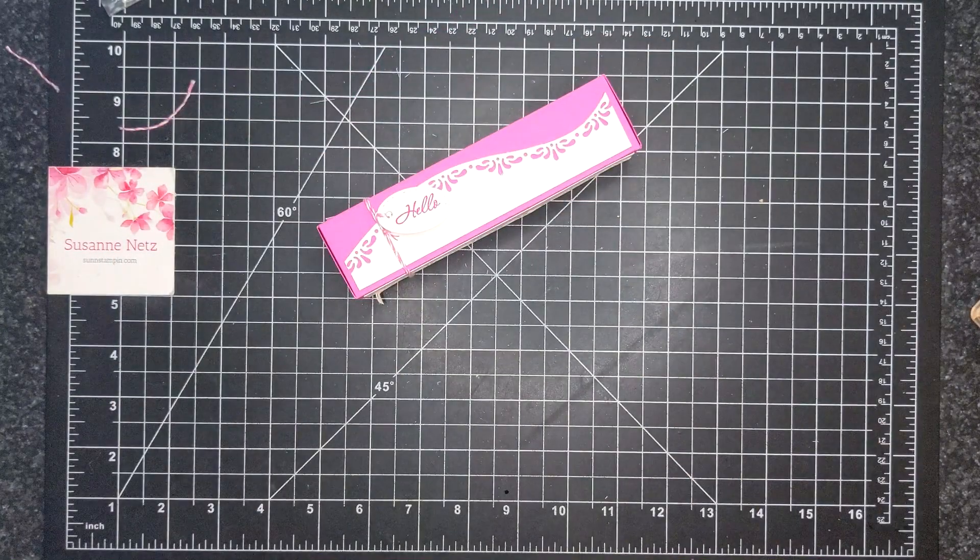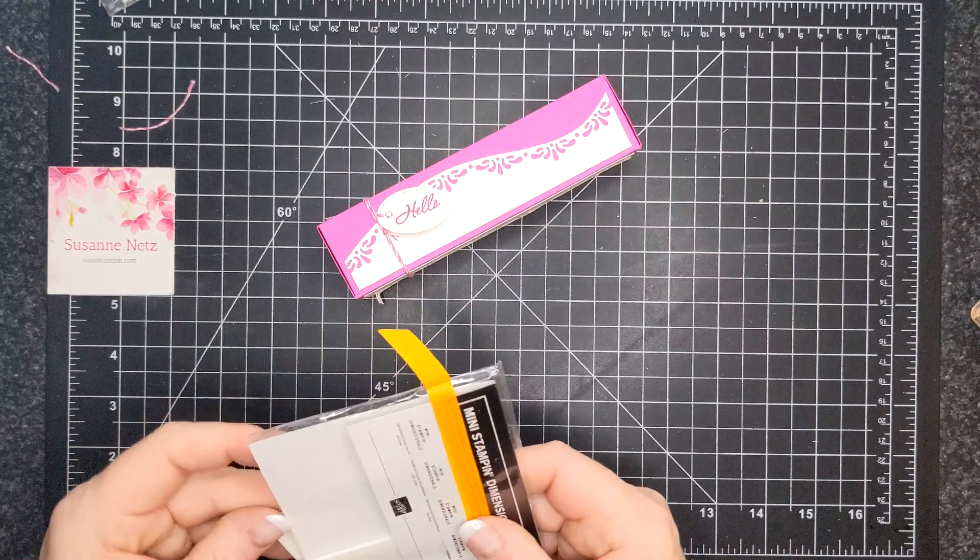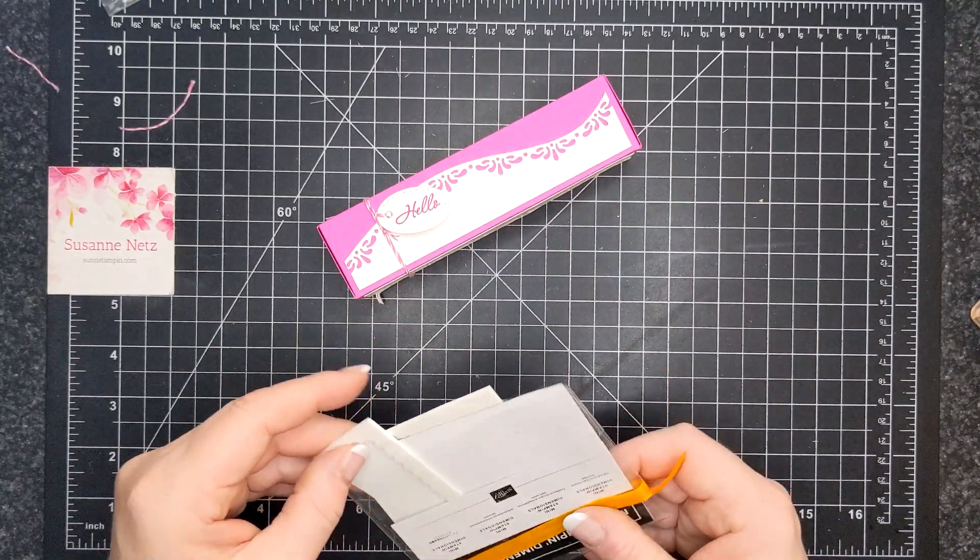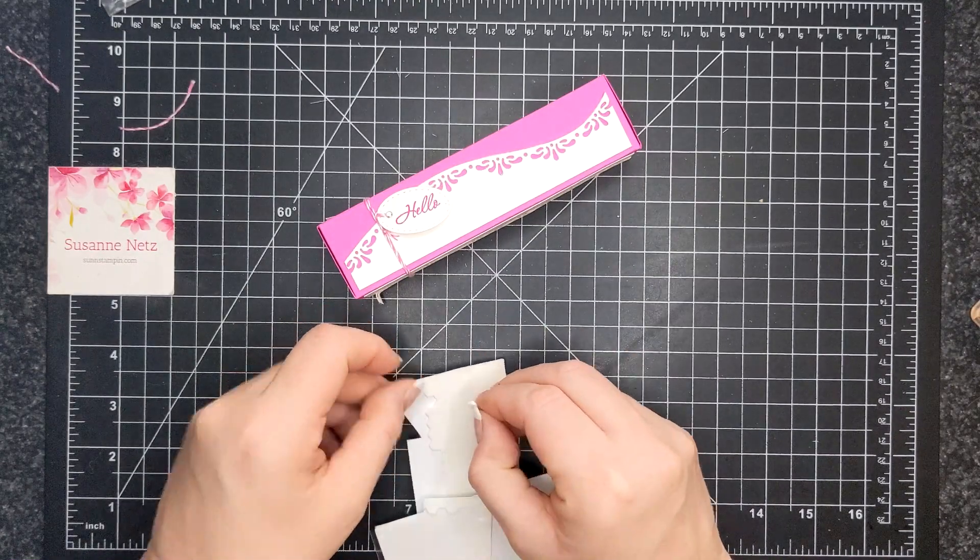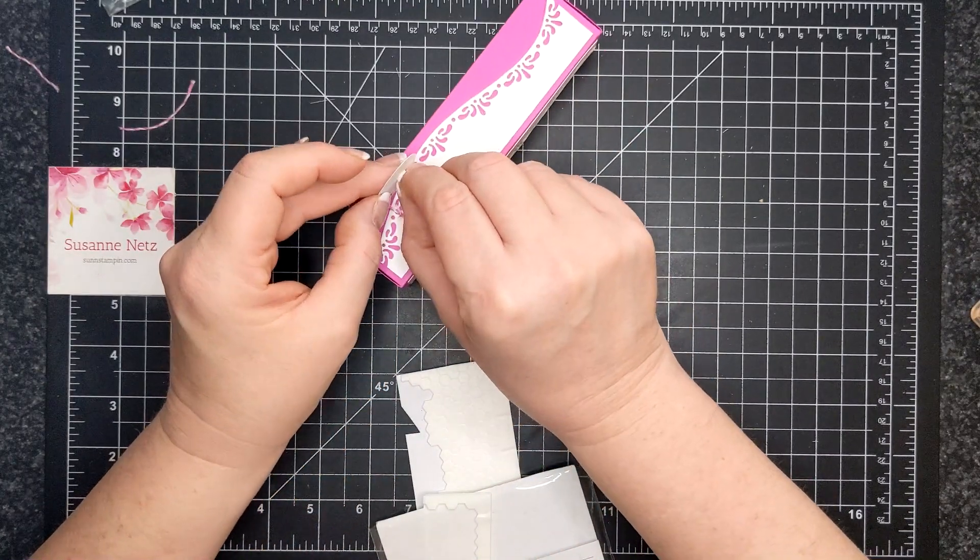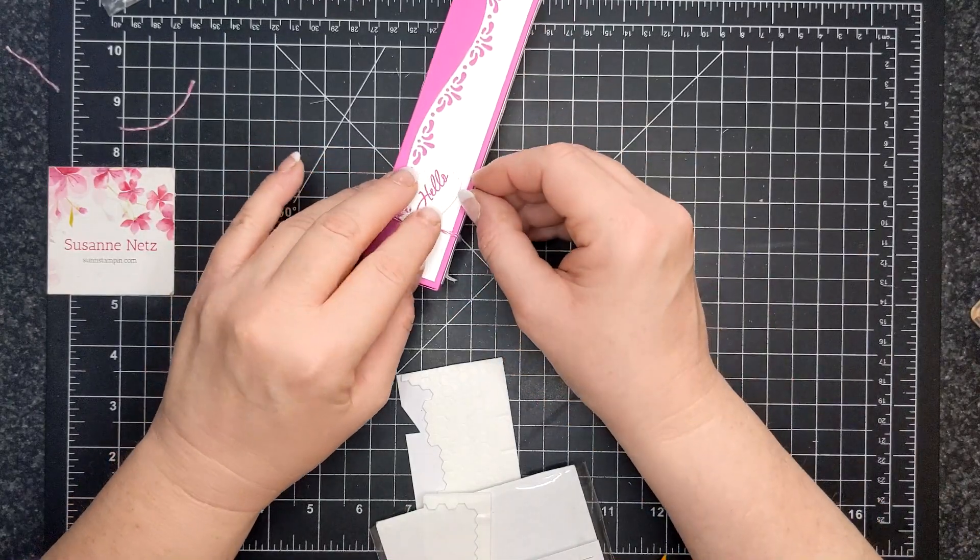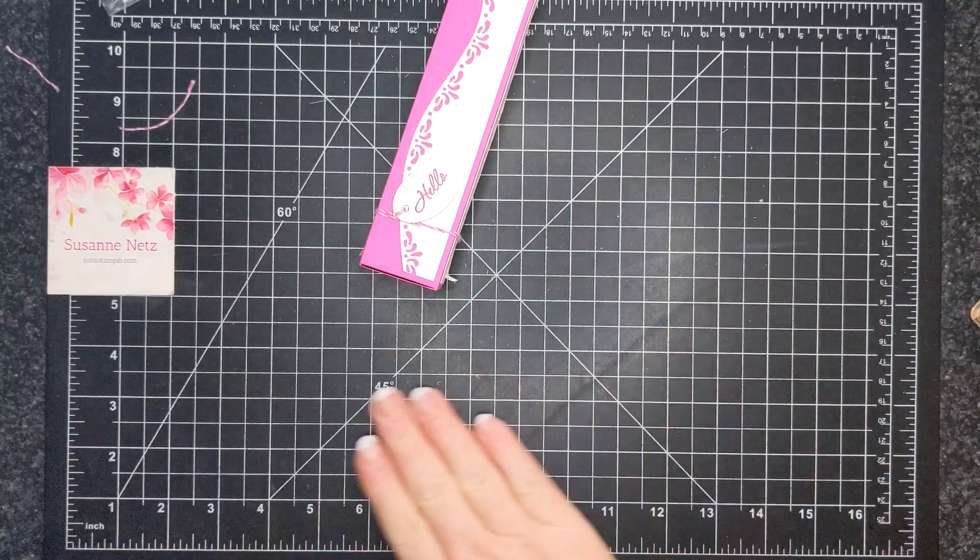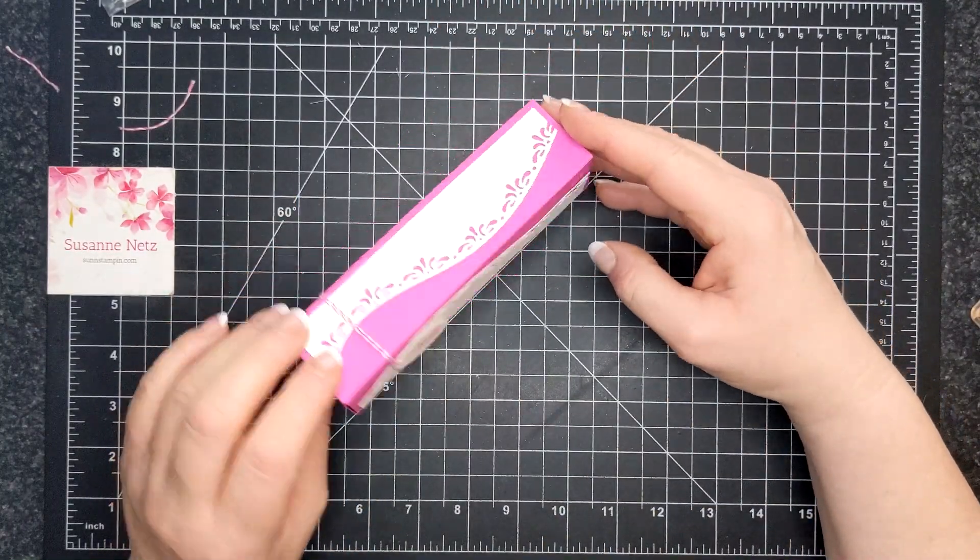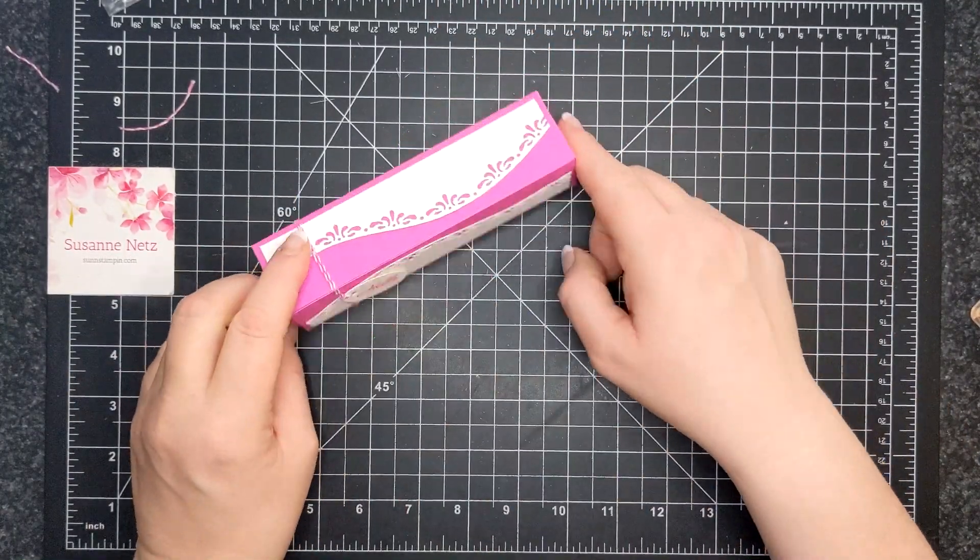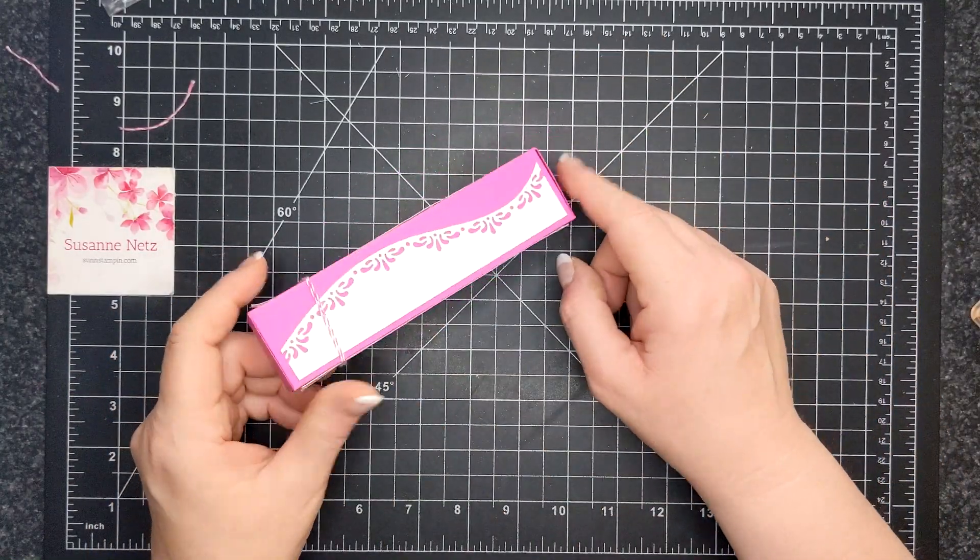And I think just for extra stability, I'm going to throw a just a quick mini dimensional right underneath the hello so it stays where I want it to stay. So I guess I'm doing a long box. I just think it's striking. I love this.